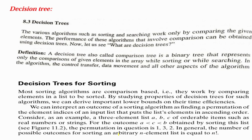Next we have decision trees. Various algorithms such as sorting and searching work only by comparing given elements. The performance of these algorithms involving comparison can be obtained by using decision trees. A decision tree is also called a comparison tree. It is a binary tree that represents only the comparison of given elements in an array while sorting or searching.